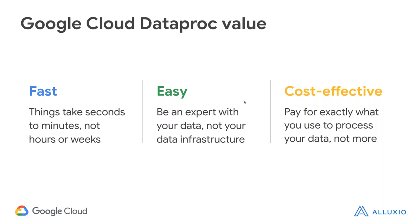Google Cloud provides multiple values. First, it's fast — you can start a cluster in seconds to minutes without waiting for processing power. It's easy — you don't need to focus on keeping the lights on or managing infrastructure; you can use your data without worrying about setting up or maintaining all the compute behind it. It's also cost-effective because you can start a cluster and kill it when done, avoiding long-running clusters that sit idle.